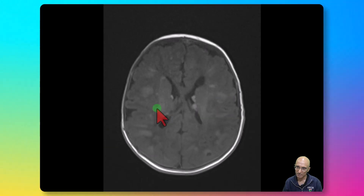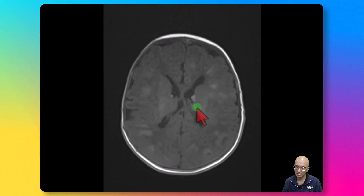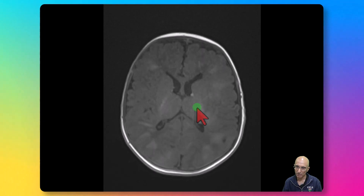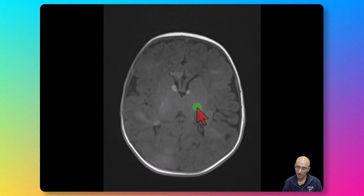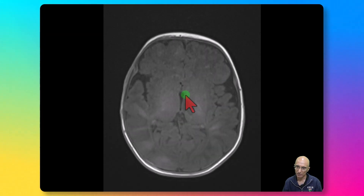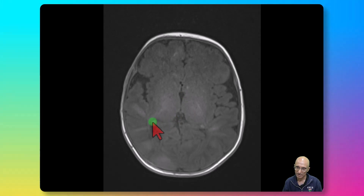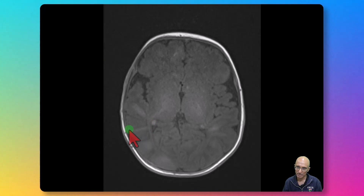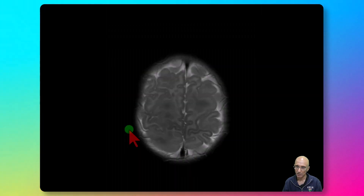Another radial hyperintense lesion extends from the sub-ependymal region to the sub-cortical regions. We can see multiple T1 hyperintense sub-ependymal nodules in the region of bilateral foramen of Monroe. Again, multiple white matter high signal lesions and multiple radial bands extending from the cortex to the sub-ependymal region.